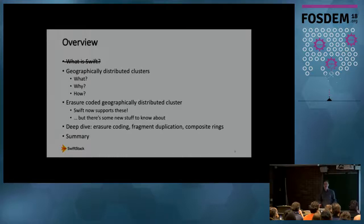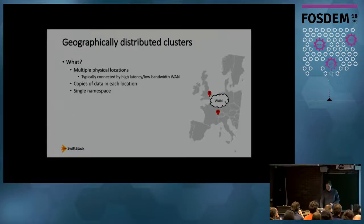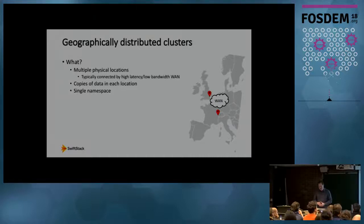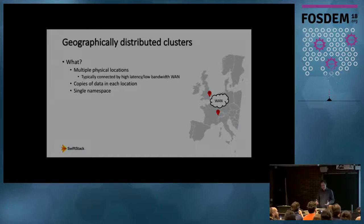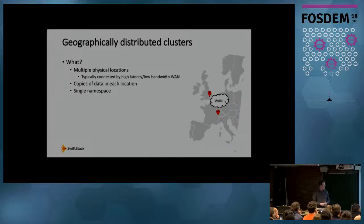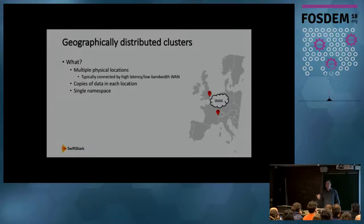That was my brief overview of Swift. Now, what is a geographically distributed cluster? My definition is a cluster consisting of data stored in multiple physical locations, typically connected by a wide area network, where every object stored has at least one copy in each physical location. We might be talking about multiple data centers, like in London and Geneva, connected by a WAN. The entire global cluster operates under a single namespace — objects are written and read in any region under the same names.